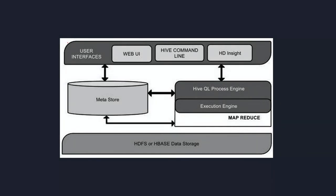This is the architecture of Hive. The first component is the user interface, because we need to interact with Hive. There are multiple interfaces: WebUI, and in real-time environments, distributions like Cloudera and Hortonworks are used. Cloudera provides a UI called Hue, and Hive is available inside it. By default, you can also use the Hive command line tool to interact with Hive.